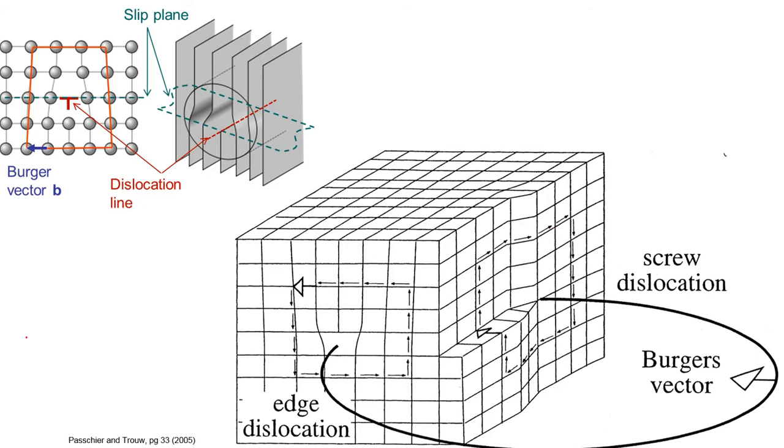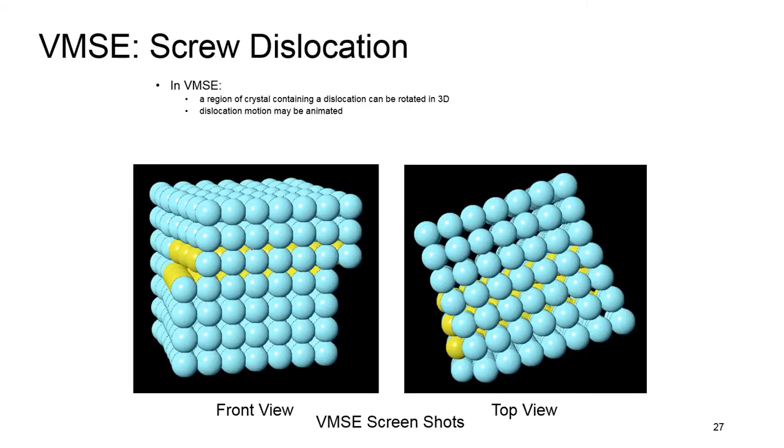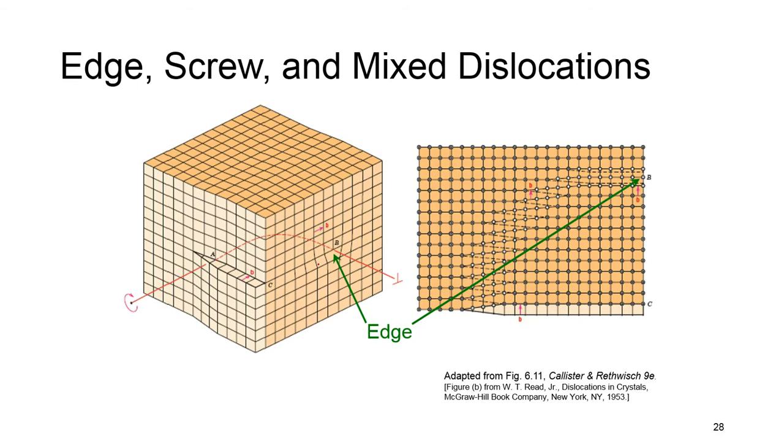So a combination of these two results in a mixed dislocation, as you can see here. We have Burger's vector resulting from edge dislocation, and another Burger's vector resulting from a screw dislocation. A 3D representation of these two dislocations is shown beautifully in the video prepared by Wiley. I only have a screenshot of the presentation. Here again you see edge, screw dislocation, and of course this is a mixed dislocation.